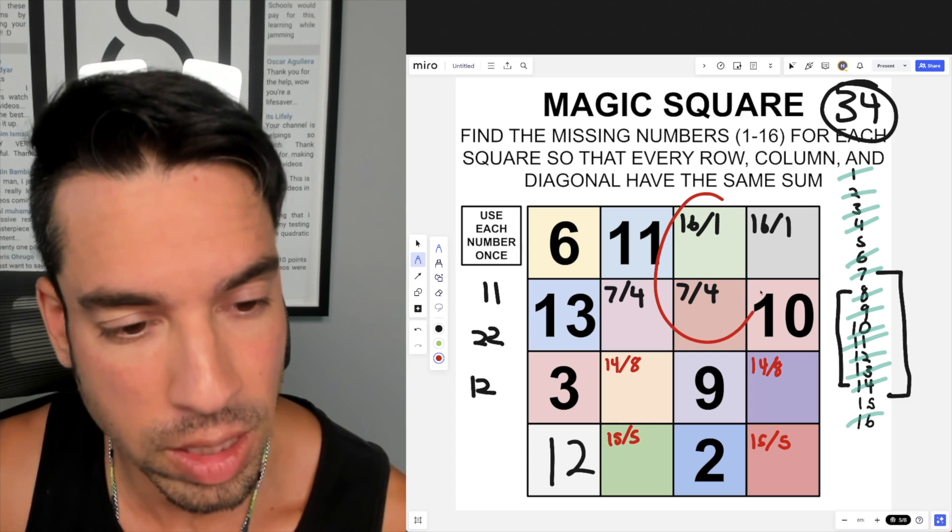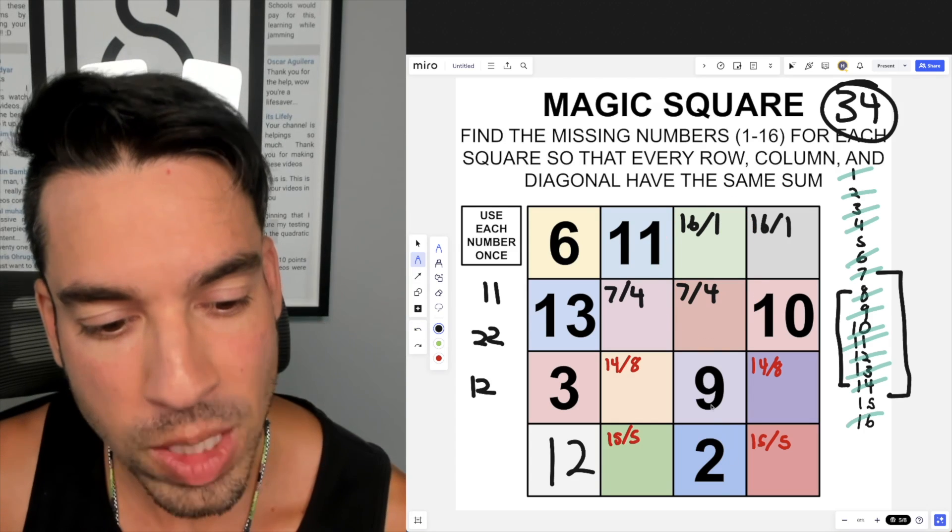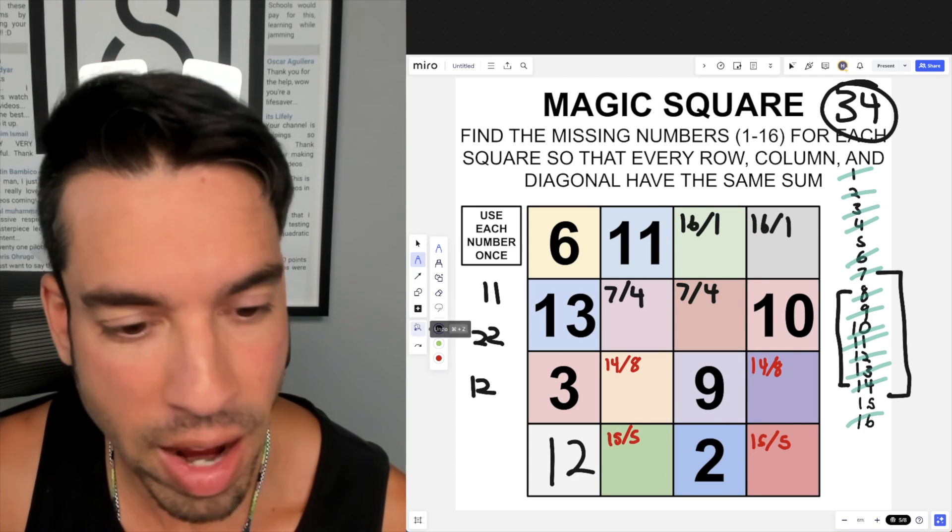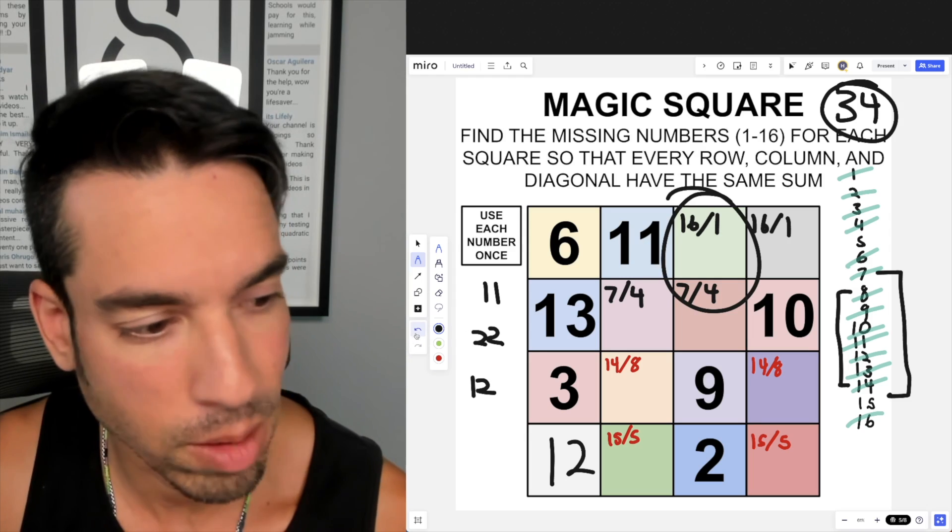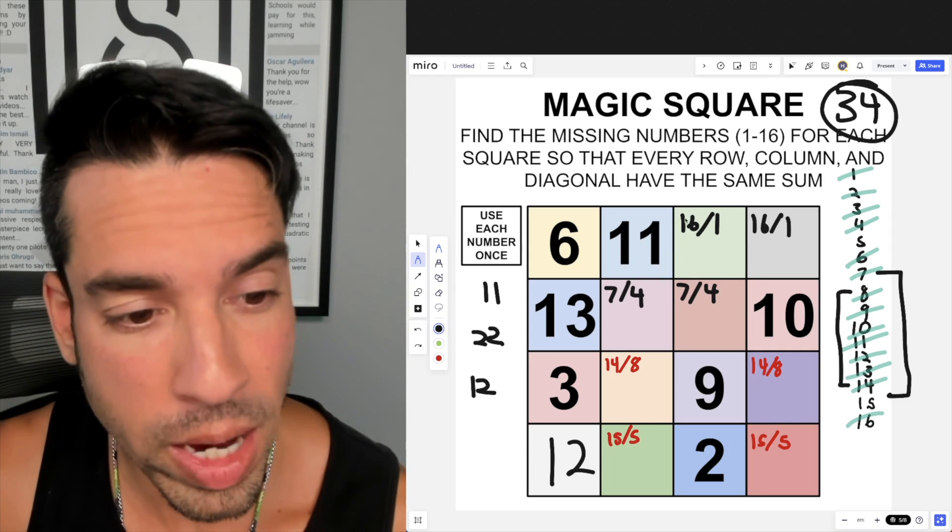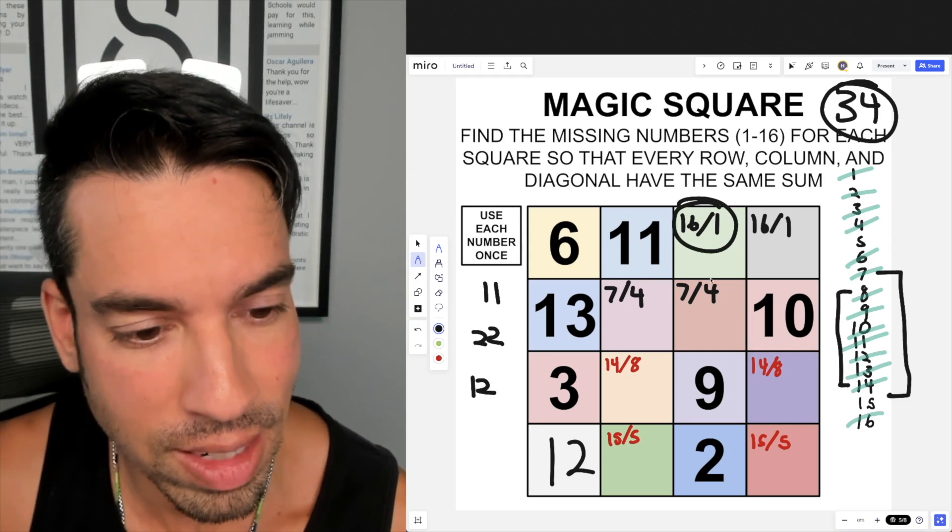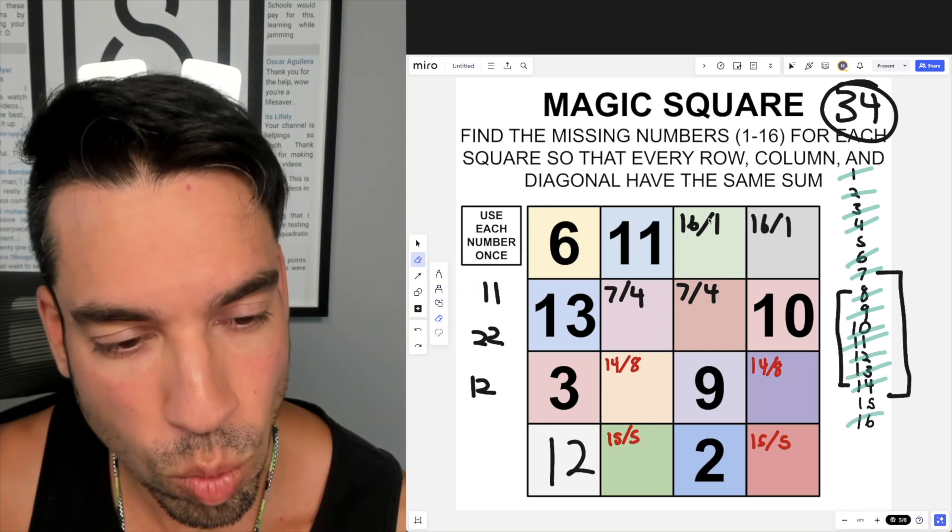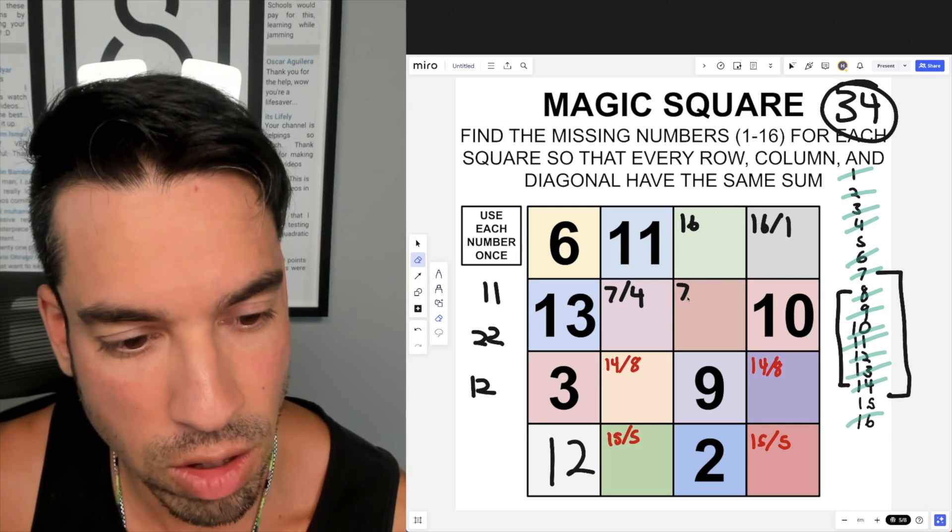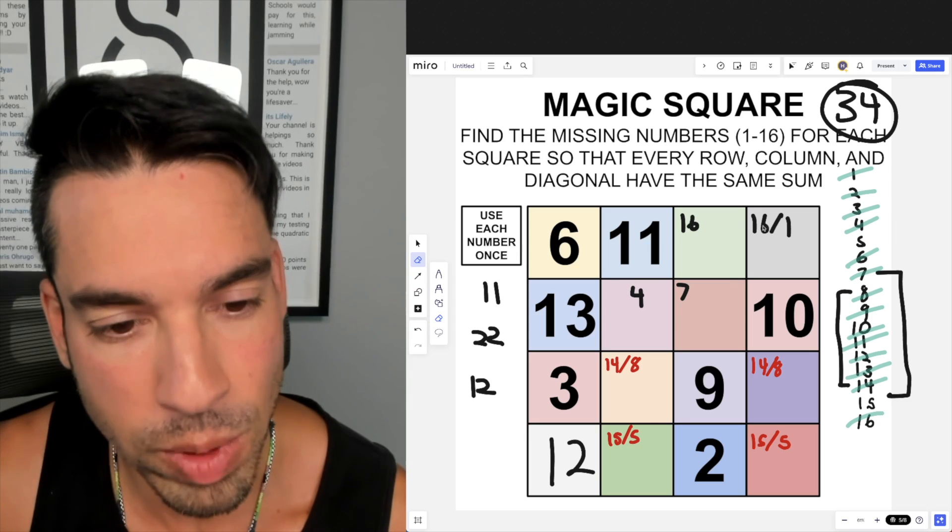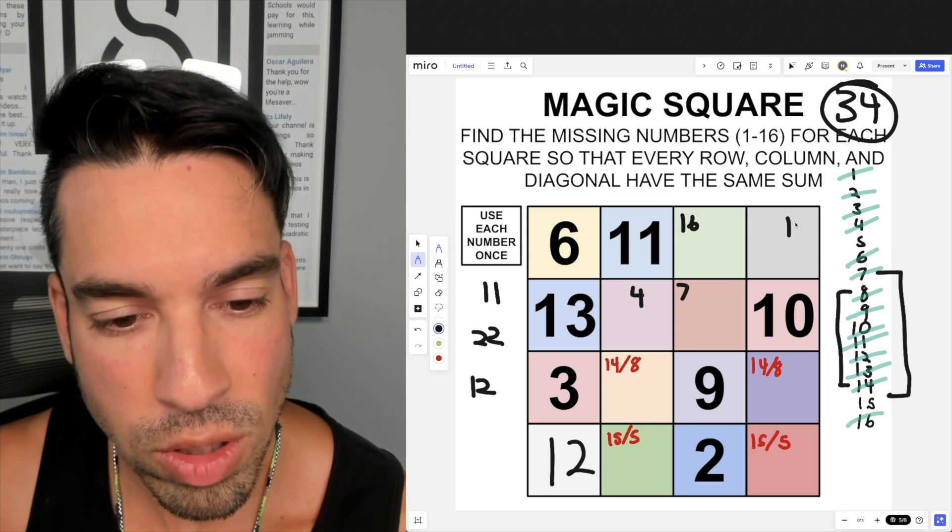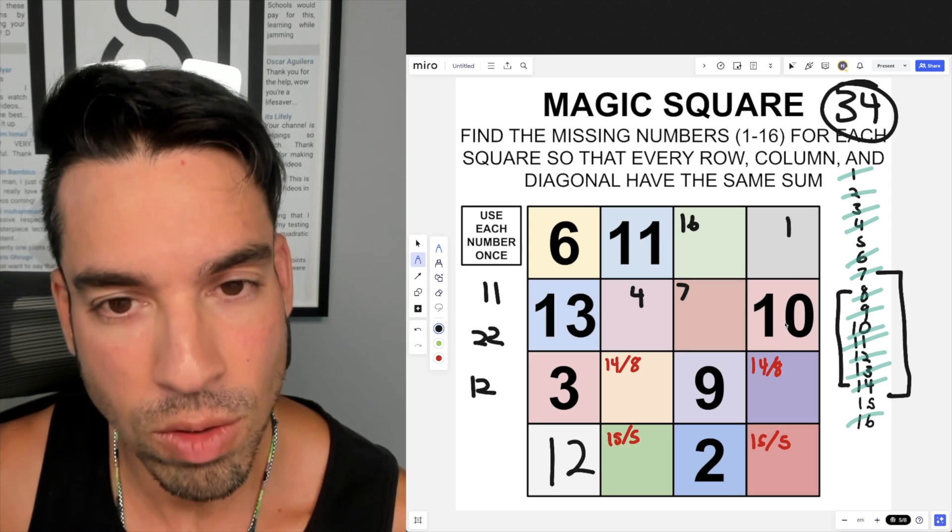So the first place I'm going to look to make some choices is I'm going to look at these values right here. The reason why is because we've already got 9 and 2 down here that are adding up to 11, meaning that I need these two spots to add up to 23. The only possible way I can see that is with 16 and 7. So that means 1 is out here, 4 is out here. If 4 is out here, we gotta have 4 here. If 16 is over here, we gotta have 1 here.